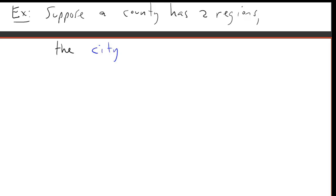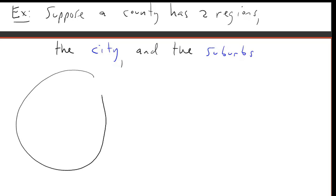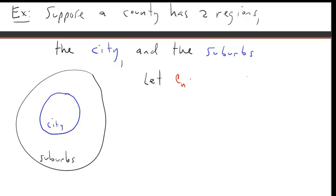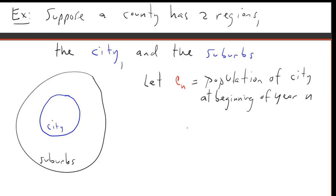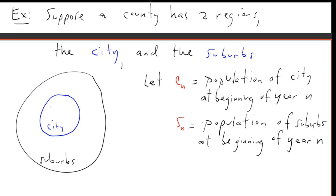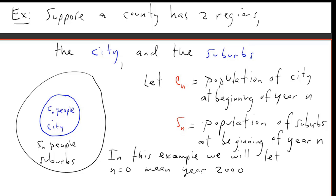Here's an example we're going to develop in detail. Suppose that a county has two regions: a higher density region called the city, and a lower density region called the suburbs. This circle represents the county, with the higher density city region toward the center, and the suburbs surrounding it. Let C_n represent the city population and S_n the suburb population at the beginning of year n.